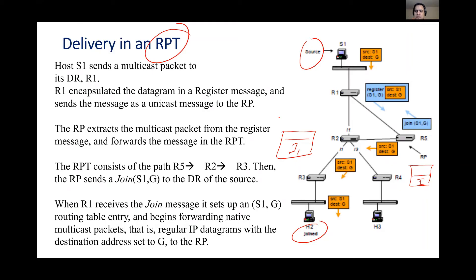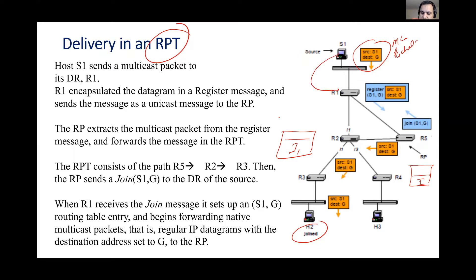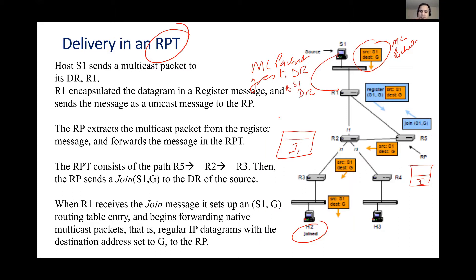Now I'll explain how the delivery works. This is the source, and the source wants to send a multicast packet. The yellow packet represents the multicast packet. Step one: the source sends the multicast packet to its Designated Router, DR of source S1.